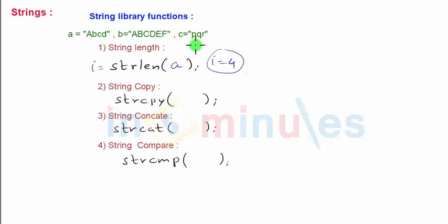Next is string copy. Function copies one string to other string. Name is strcpy. The syntax is like this. We write two strings over here, let's say A and C. It copies second string into first string. That is C will be copied into A and result will be A will change, C will remain as it is. So after this operation is done, string A will be PQR. C will remain as it is.